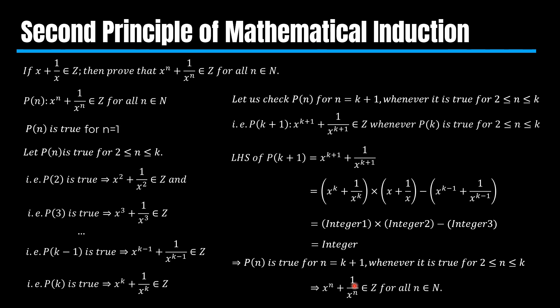It means x^n + 1/x^n is an integer for all n belonging to the set of natural numbers. So this is how we can prove this statement using the second principle of mathematical induction. If you find the content of this video useful, please hit the like button and also consider subscribing. Thanks for watching.